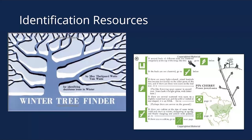Jumping into identification resources — there are a bunch of books out there on tree ID. A lot of those focus heavily on growing season characteristics, things you're going to see in the summer. There are a few that do cover winter ID fairly well. One that I really like is a small little pocket book called the Winter Tree Finder. This is really good for people that are just learning — it's basically a key you go through, very simple to use.